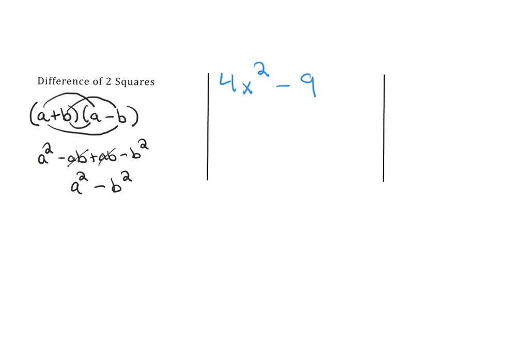If you recognize that you have the difference of two squares it's very quick to factor. What you can do is just square root your first term which is 2x and put that in the front, square root your last term which is 3, and then for those middle terms to cancel you'd have to have one plus one minus.